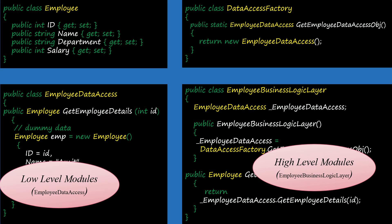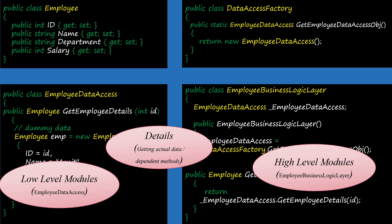Next is "details." The getEmployeeDetails method of EmployeeDataAccess — where we are fetching actual employee details — acts as a detail here. If you see our EmployeeBusinessLogicLayer class, it is already aware of EmployeeDataAccess and its method getEmployeeDetails. In a live environment there might be thousands of methods, and it is not advisable that our high-level class should be aware of all low-level class methods and details.